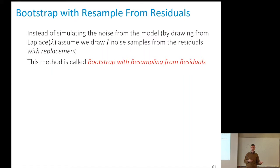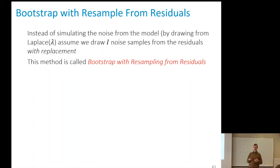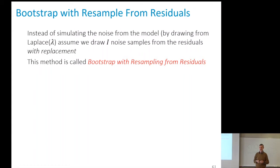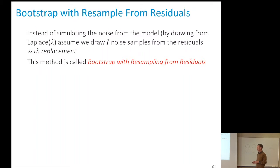The parametric bootstrap estimates lambda and draws from that distribution. This other form of bootstrap simply repeats the residuals that you have — because the best you know is the values themselves. Whether one or the other is better is not very clear. We know there is a bias in the estimated residuals, so it might be better to regenerate from the fresh model, but sometimes it's more convenient to resample directly.